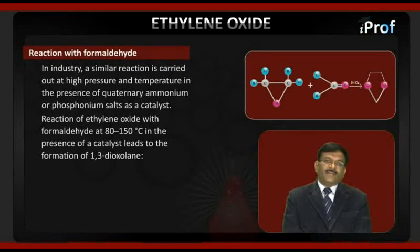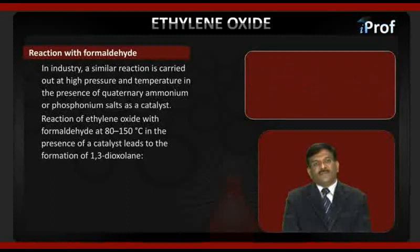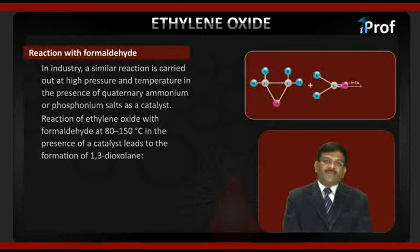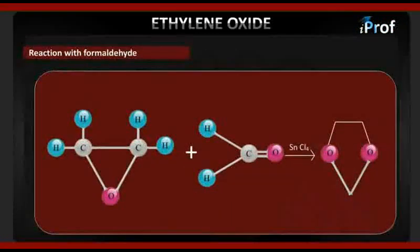In industry, a similar reaction is carried out at high pressure and temperature in the presence of quaternary ammonium or phospholium salts as a catalyst. The reaction of ethylene oxide with formaldehyde at 150 degrees centigrade in the presence of a catalyst leads to the formation of 1,3-dioxolane.